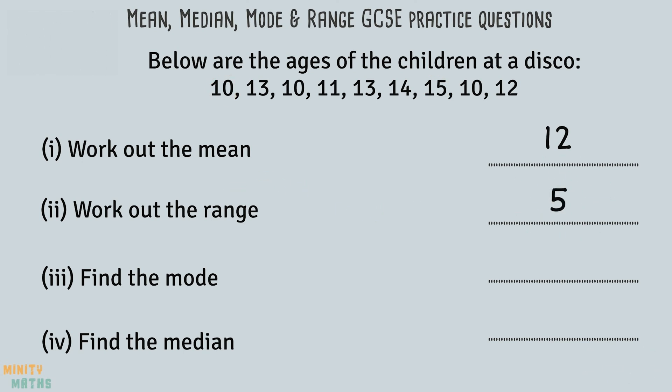To find the mode we need to see which age occurs the most in the list. We can see that the ages 10 and 13 appear more than once. 10 occurs 3 times, while 13 only appears twice. Therefore, 10 is the mode.